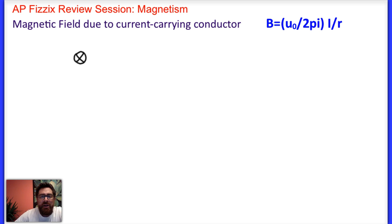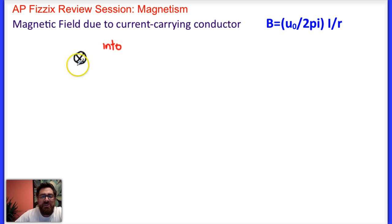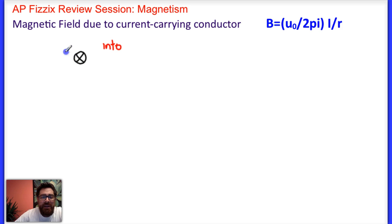the Z dimension would be into or out of the screen. This X symbol describes a current-carrying conductor going into the paper — you need to know that convention. If you use your right hand and put your thumb in the direction of the current flow — in this case into the paper — your fingers will be in the direction of the magnetic field, which wraps in the clockwise direction.